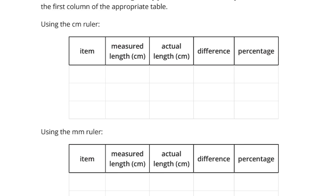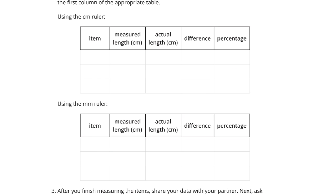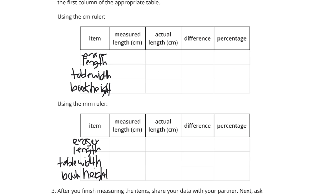So, the items we're going to list here are an eraser length, a table width, and a book height. Now, for the actual lengths in centimeters here, 19, 110.4, and 27.5.